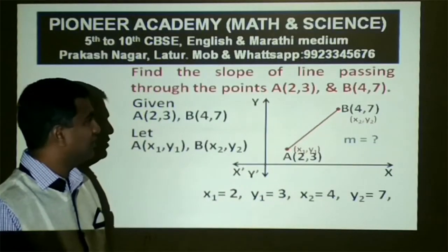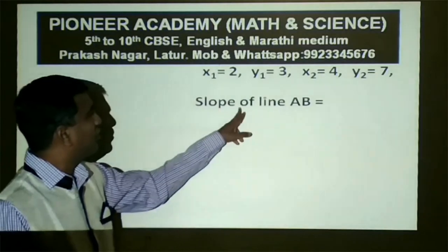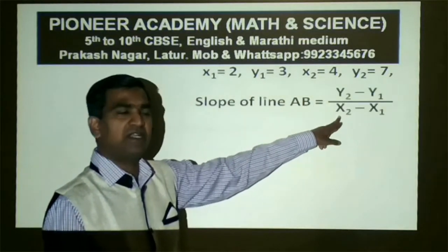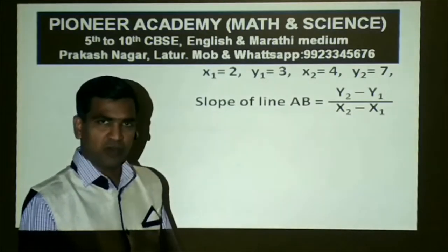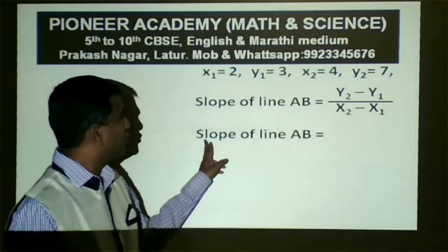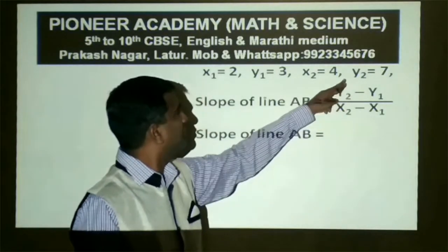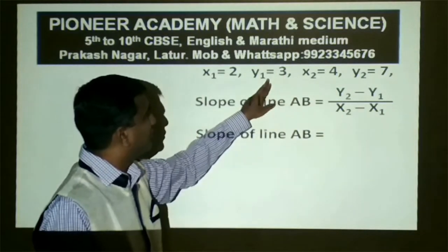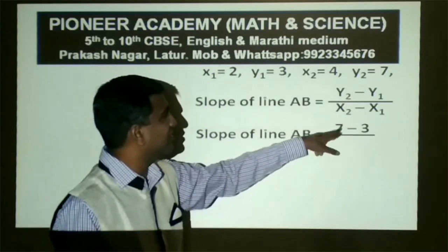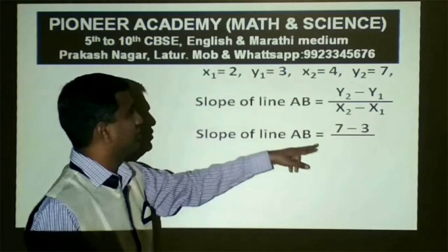We need these values now. The slope of line AB equals y2 minus y1 divided by x2 minus x1. That is the formula. Substituting: slope of line AB = y2 (which is 7) minus y1 (which is 3), divided by x2 minus x1, that is 4 minus 2.